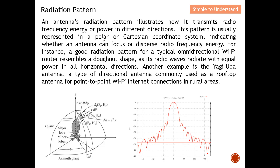This pattern is usually represented in a polar or Cartesian coordinate system. Both systems illustrate how the antenna releases electromagnetic waves, indicating whether an antenna is focusing or dispersing radio frequency energy equally in all directions.